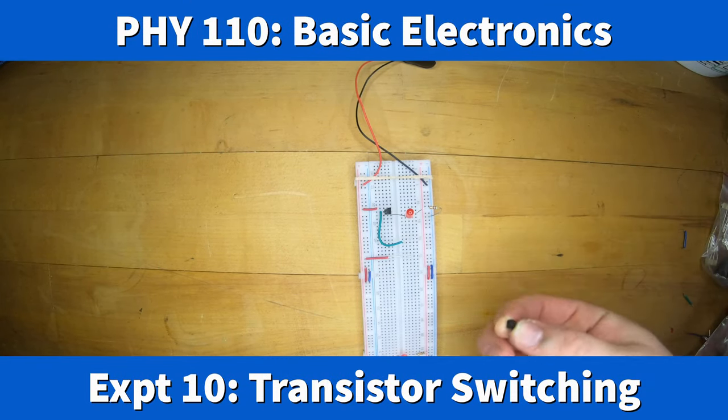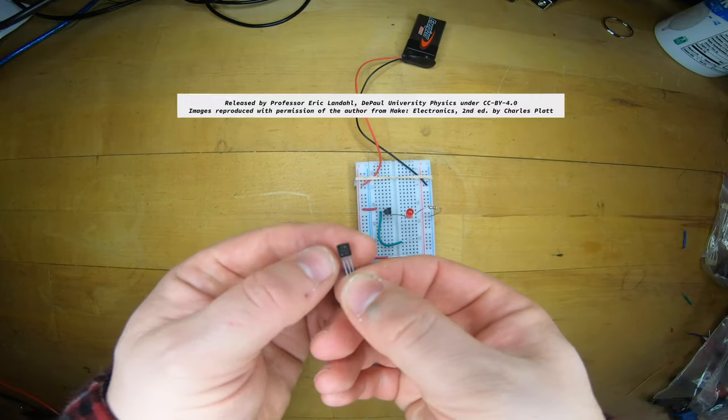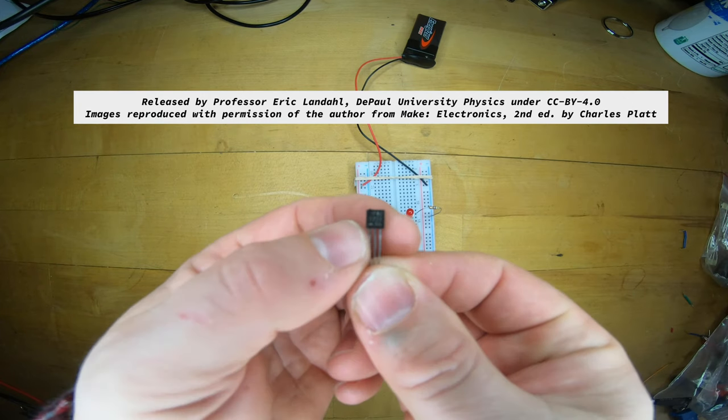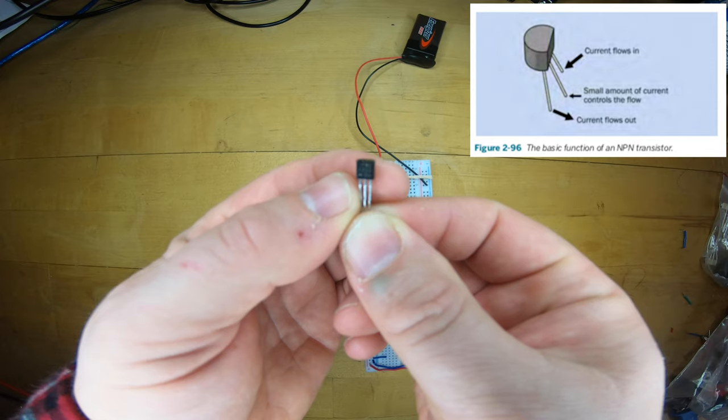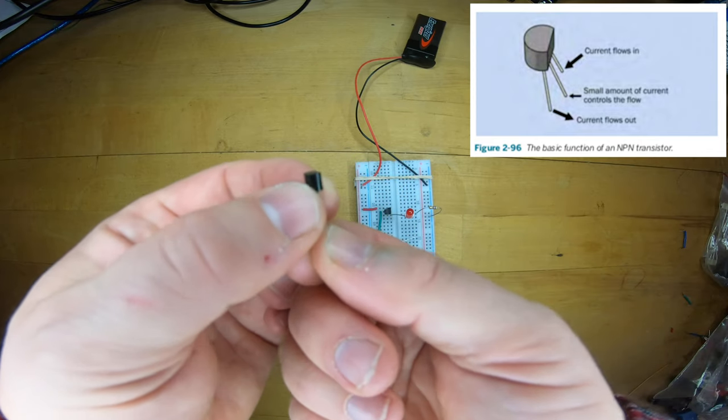We've been looking at mechanical switches such as relays and single-pole double-throw switches, amongst others, in Chapter 2 of Make Electronics 2nd Edition by Charles Platt.